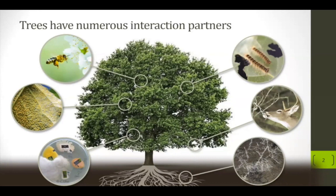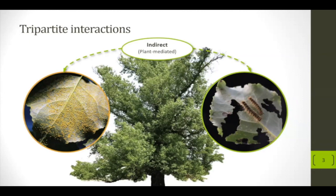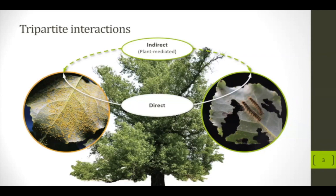I want to focus on pathogenic microbes today and one specific insect herbivore. If we have two interaction partners at the host tree together or one after another, they could interact in different ways. There could be an indirect or plant-mediated interaction, where one partner changes the host tree's chemistry or physiology in a way that affects the other. This could happen when they are there at the same time, but also with a temporal or spatial distance. There is also a direct interaction possible in which both partners must be at the same time and place to come into direct contact with each other.